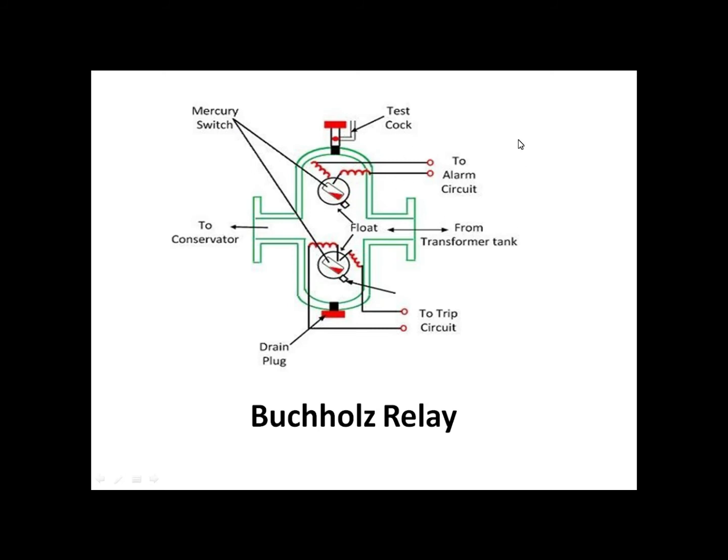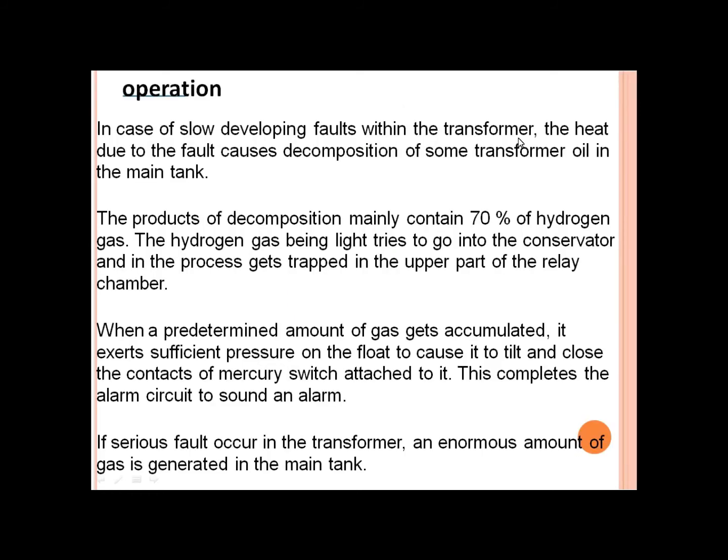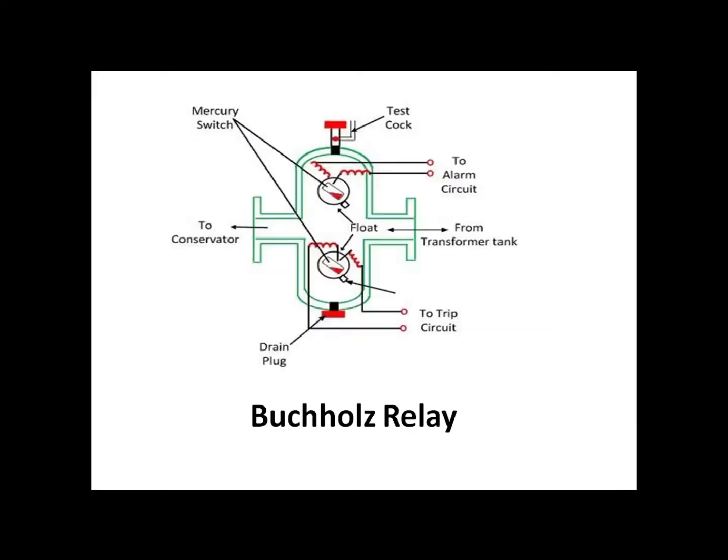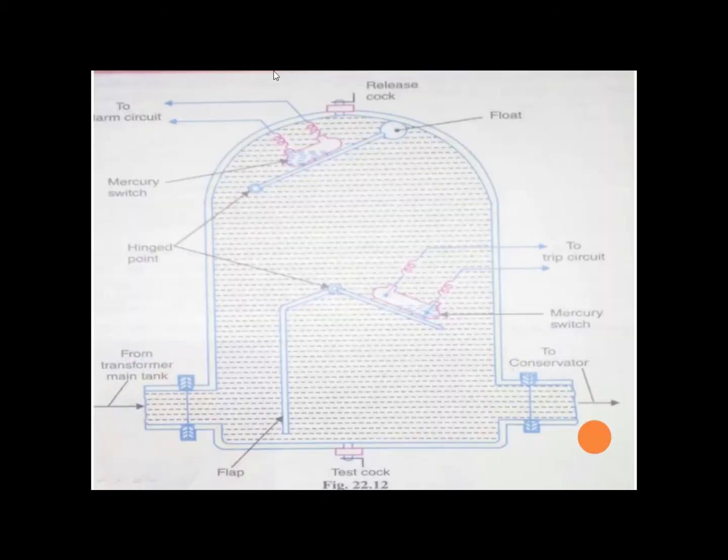If we discuss the operating principle, what happens? In case of a slow developing fault within the transformer, the heat due to the fault causes decomposition of some transformer oil in the main tank. So if you have a fault that occurs, when the oil breaks down, gases are produced.